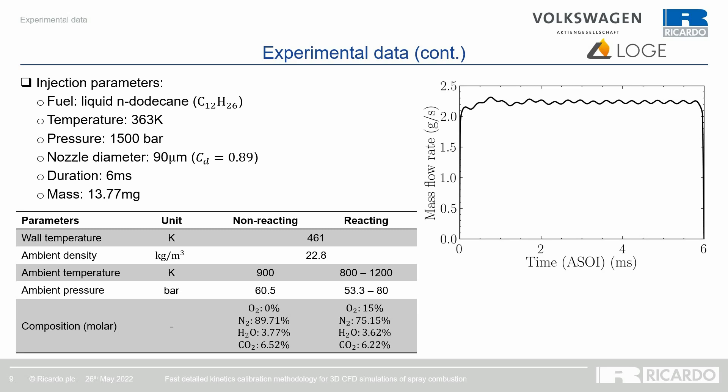For the non-reacting cases, the ambient temperature is kept at 900 Kelvin with a pressure of 60 bars and a mixture composition without oxygen. For the reacting cases, the ambient temperature varies between 800 and 1200 Kelvin, while the pressure varies between 53 and 80 bars, with the composition remaining identical at 15% oxygen per mole.